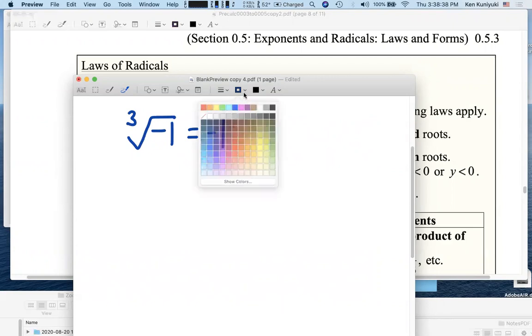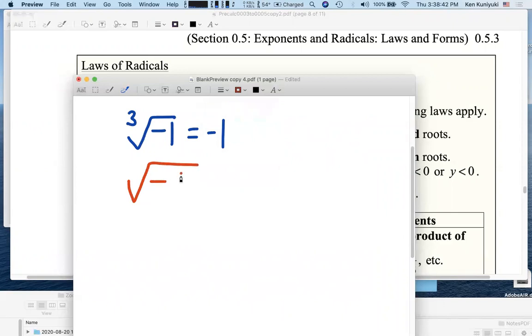However, negative 1 does not have real square roots. The principal square root of negative 1 we call i, but that's not real. That doesn't count. So we're not allowing things like the square root of negative 1, or for that matter, the fourth root, the sixth root, the eighth root, any even root of a negative value. We're not allowing those now.